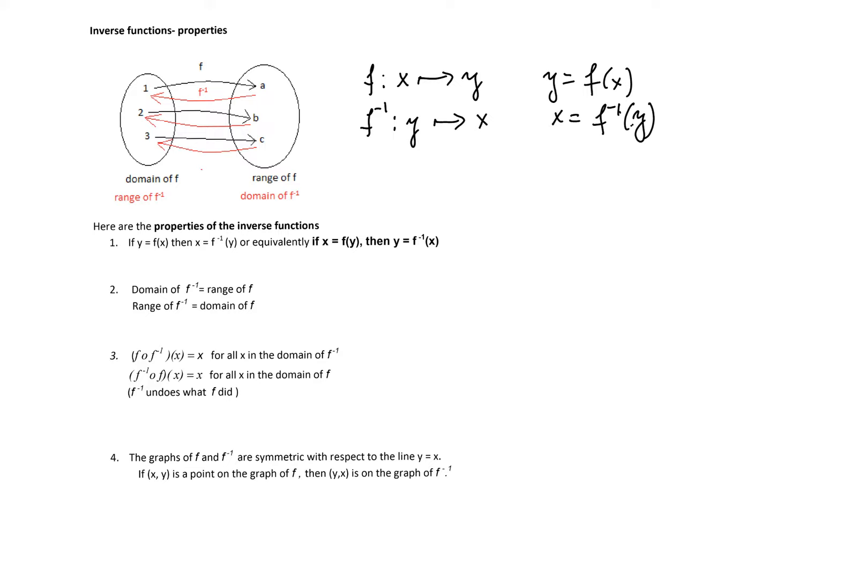Therefore we have the first property: if y is equal f of x then x is equal f inverse of y. And equivalently after switching x and y to that more traditional notation, we'll say that y is equal f inverse of x if x is equal f of y.